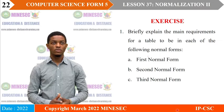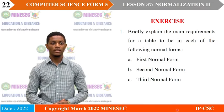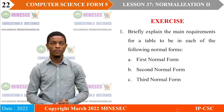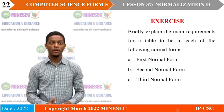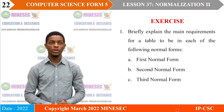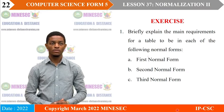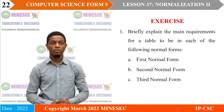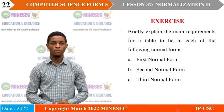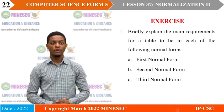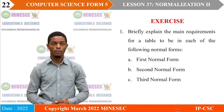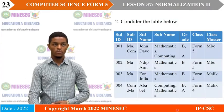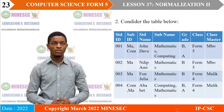Let us do the following exercises to better understand the lesson. Question 1: briefly explain the main requirements for a table to be in each of the following normal forms — A: the first normal form, B: the second normal form, C: the third normal form.